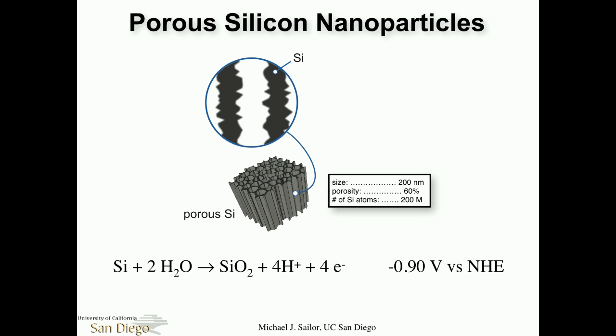The important thing about those 200 million atoms is that we can do chemistry with them. Silicon itself is a reducing agent — it can spontaneously reduce water and generate hydrogen gas. It's also reasonably easily oxidized, even just with water, and ultimately it wants to go to silicon dioxide. A lot of my story focuses on these two forms of silicon: elemental silicon and silicon dioxide.